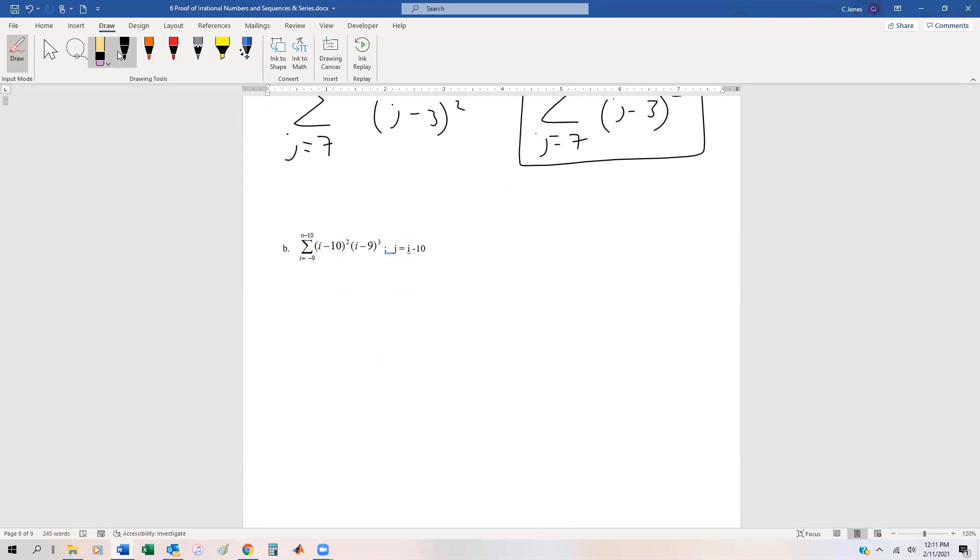As a secondary example of this, we have i equals negative 9 to n minus 10. i minus 10 squared over i minus 9 cubed, and j is equal to i minus 10. So just like we did before, this means that j plus 10 is going to be equal to i. And so we're going to substitute back in. So i equals negative 9, and we know that j is i minus 10, so negative 9 minus 10 is negative 19. And then if i equals n minus 10, then n minus 10 minus 10 is going to be n minus 20.